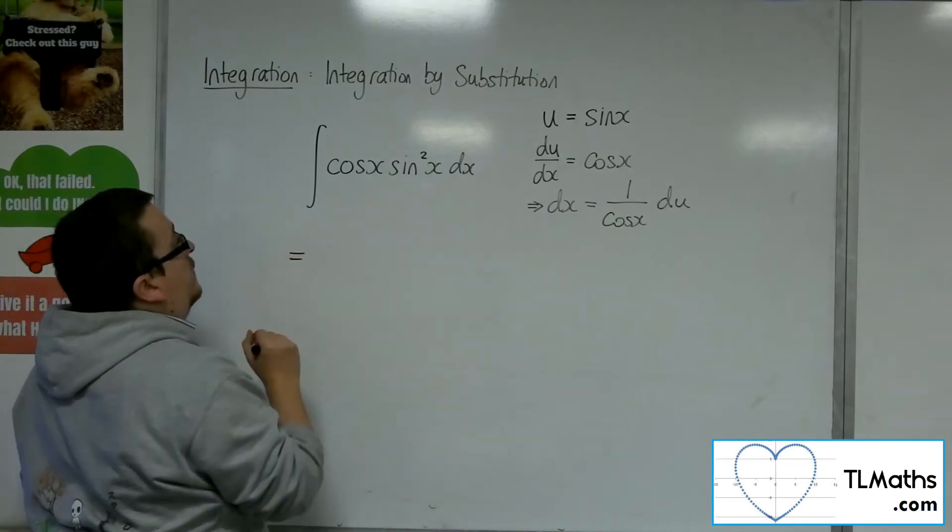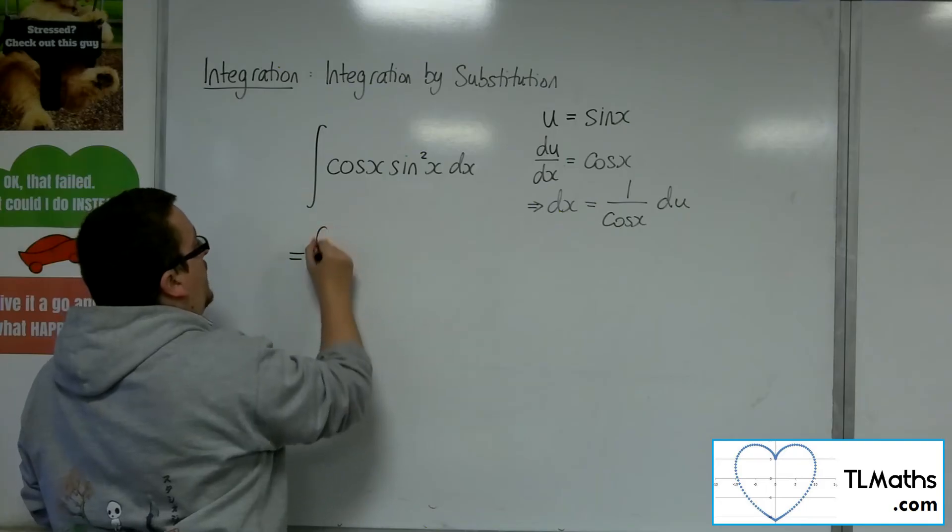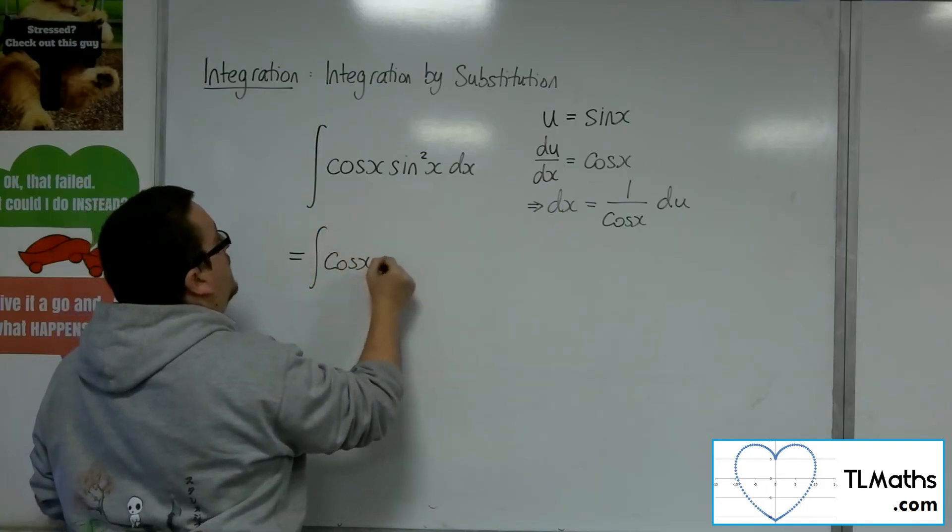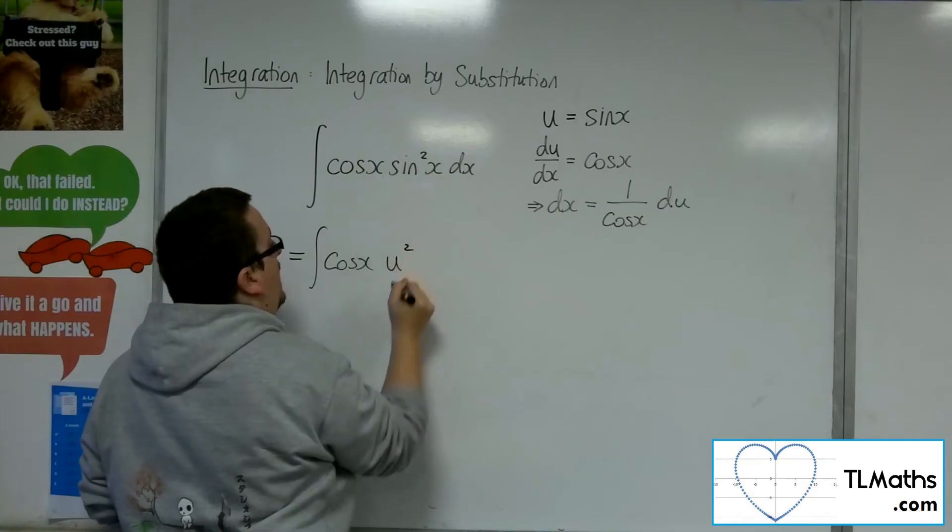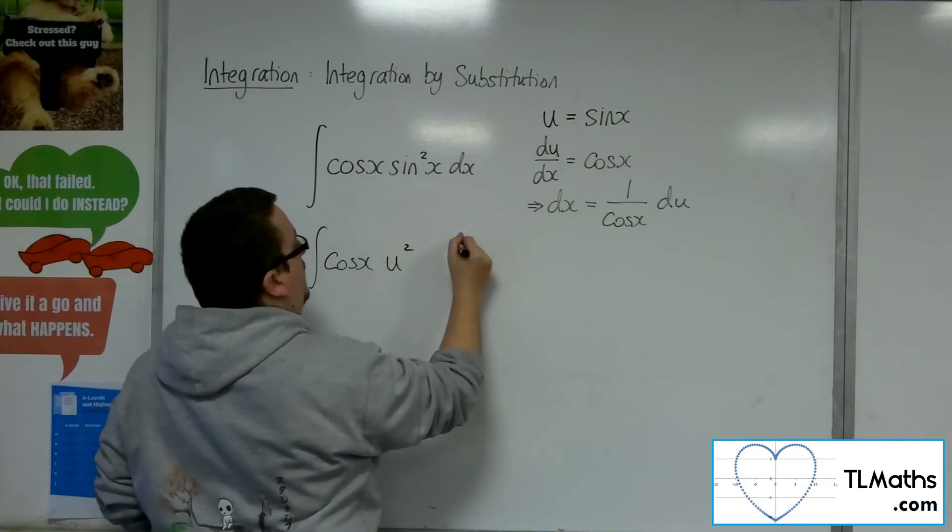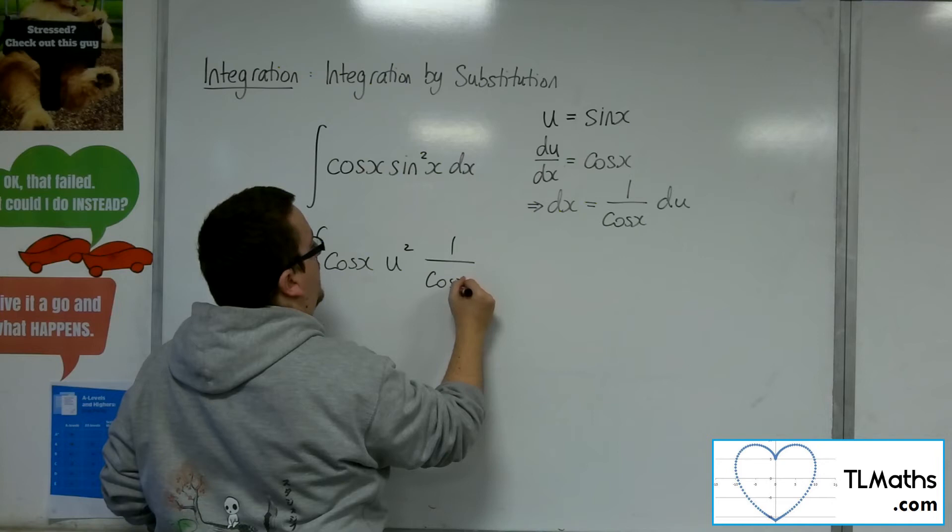So, for this integral, we've got the cosine of x still there. The sine of x is the u, so we've got u squared. And the dx is 1 over cosine of x du.